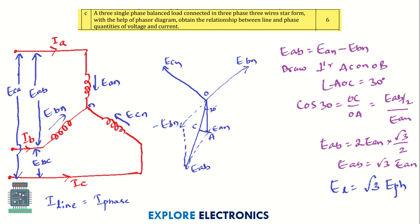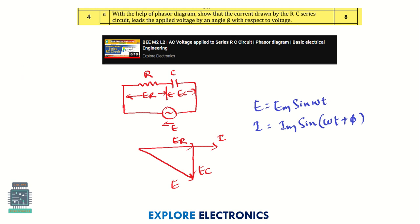This is an important question — you may expect star or delta connections in the exam to derive the relationship between line and phase quantities. Question 4 covers RC circuit. Note that question 3 asks RL circuit and question 4 asks RC circuit, so RC, RLC, pure capacitor, and pure inductor are all important and you need to know the derivations completely.